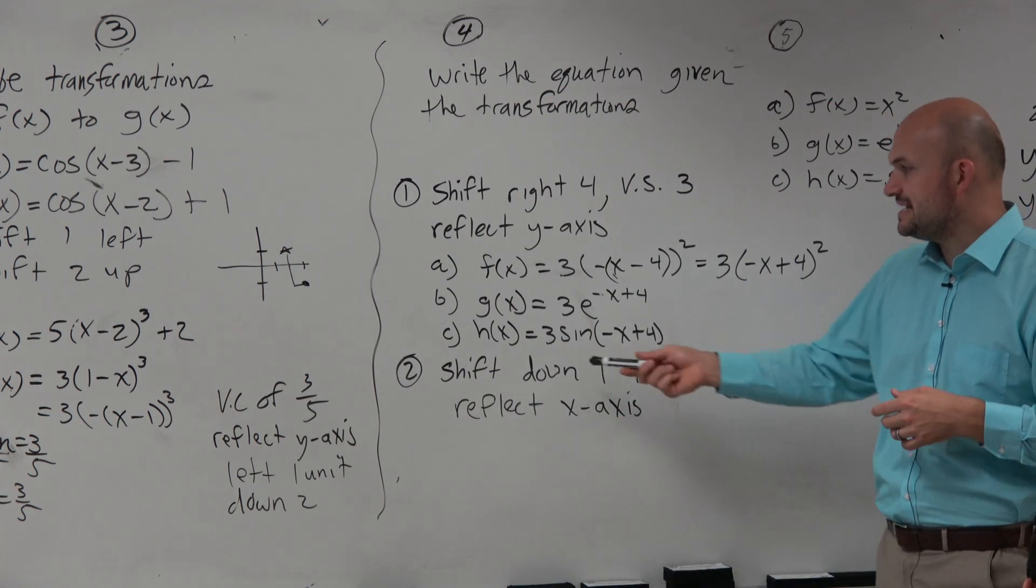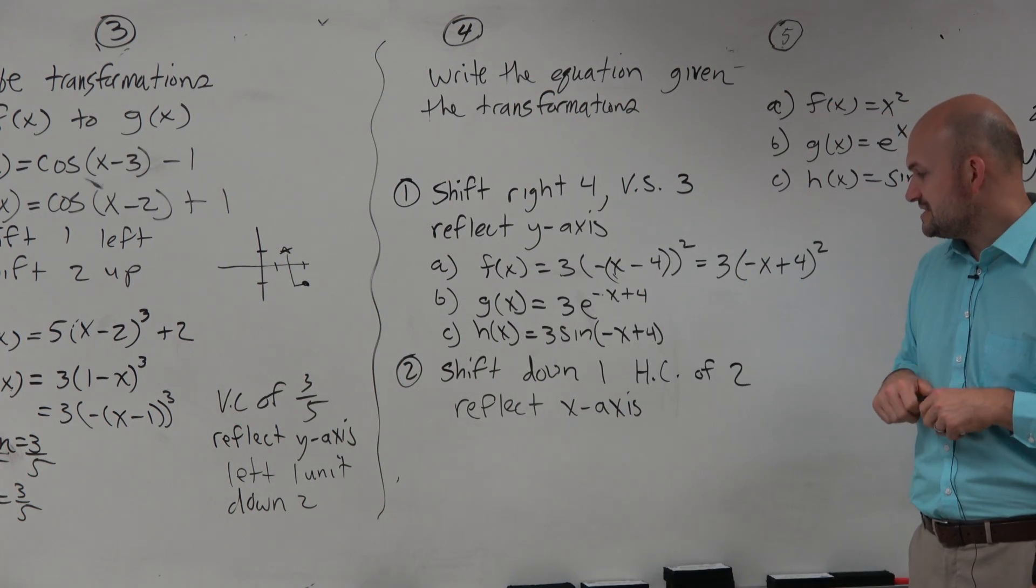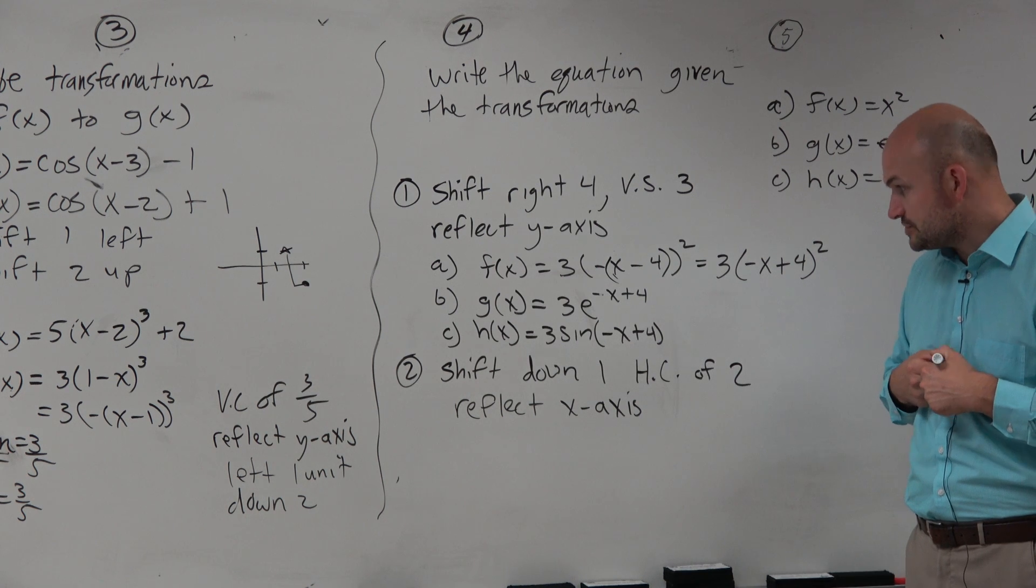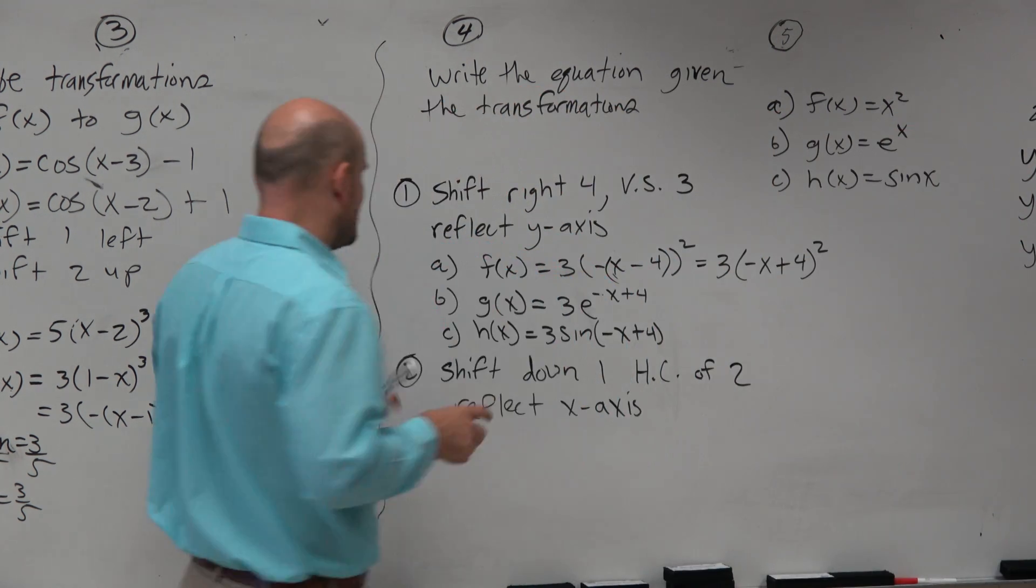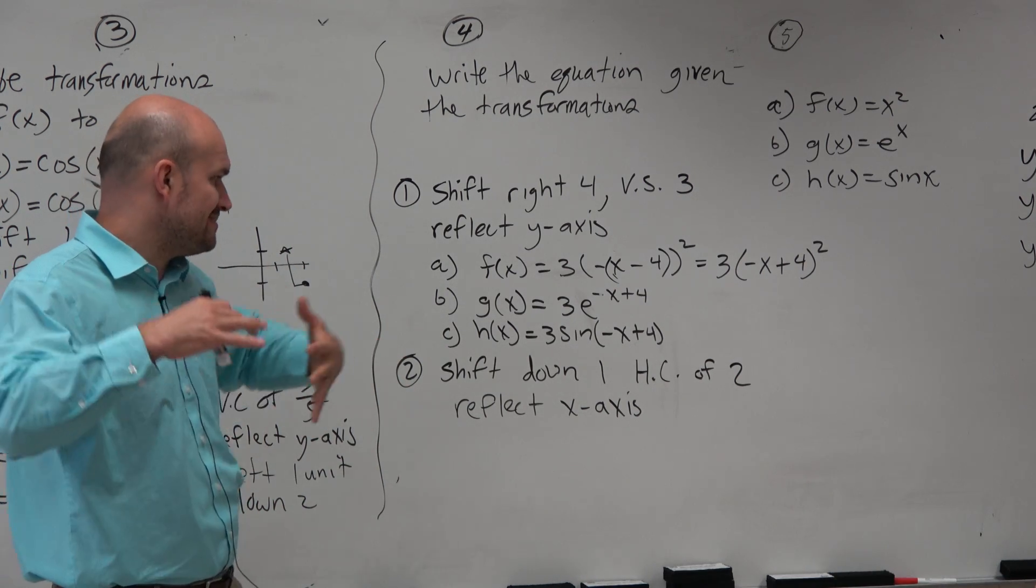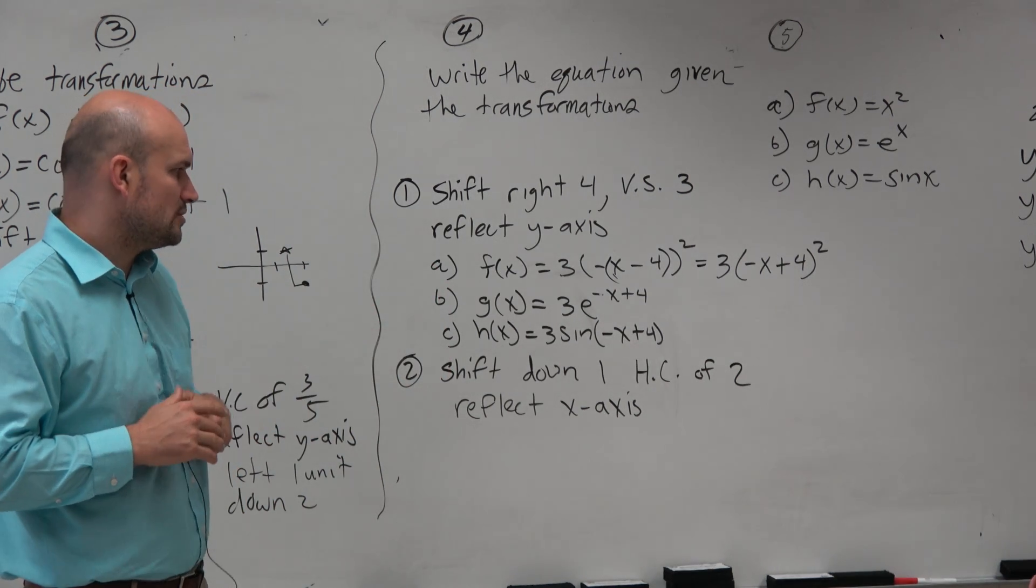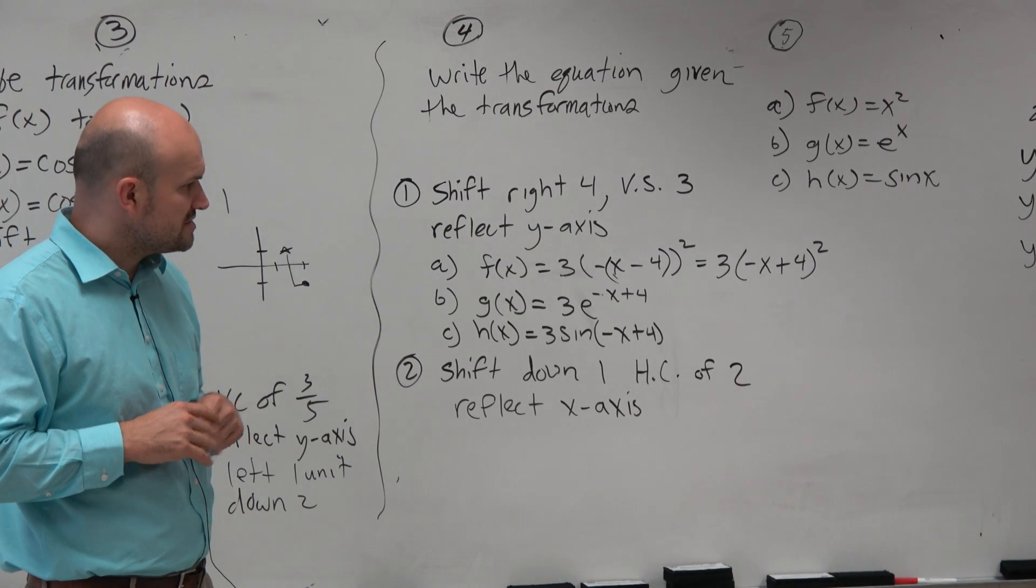So let's just do one more example. We see a shift down 1. We see a horizontal compression of 2. And we see a reflection about the x-axis. So reflection about the x-axis and the down 1 is going to be on the outside. And then the horizontal compression of 2 is going to be on the inside.